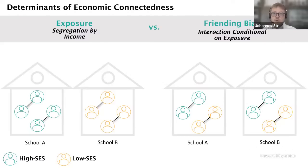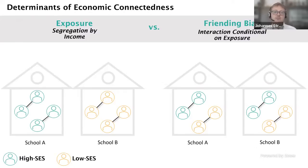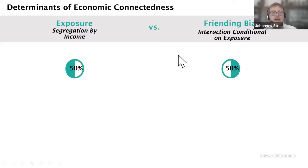The second determinant is what we call friending bias — the degree to which two individuals of different incomes interact with each other conditional on being exposed to each other. In the right panel, we show two schools that are fairly balanced by socioeconomic composition — both with high and low SES individuals — but with a lot of friending bias, where high-SES individuals only befriend other high-SES individuals. Quantitatively in the data, both exposure and friending bias are approximately equally important — each accounting for about half of the difference in high-SES friend shares between low and high-SES individuals.